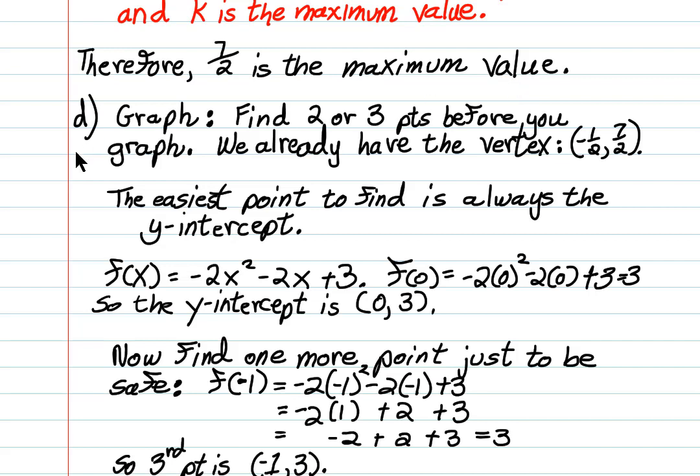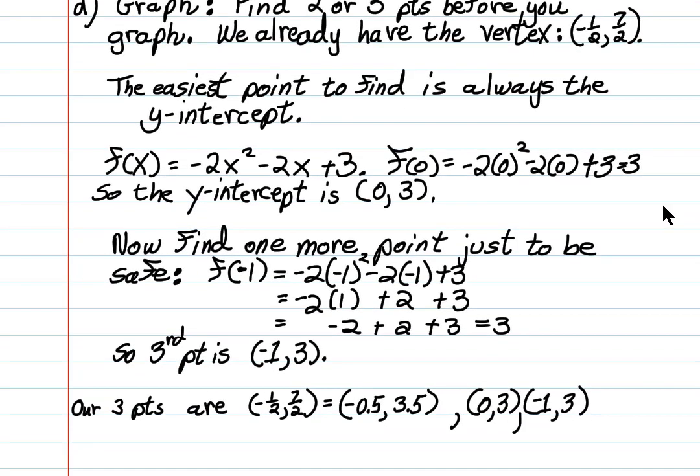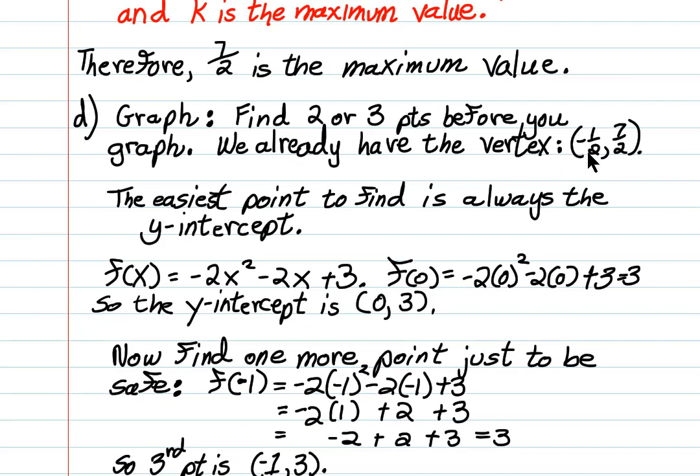Now for part d we're going to have to graph, and we'll be going back to MyMathLab. But we need to find some points. We've already got the vertex, negative 1 half and 7 over 2. And the easiest point of all to find is the y-intercept. To find the y-intercept, you let all of the x's equal 0. So we find f(0), which just leaves us with the constant 3.